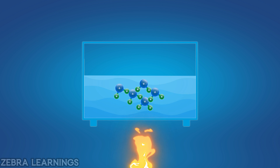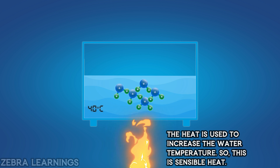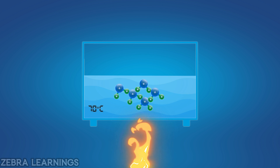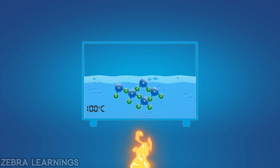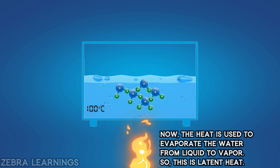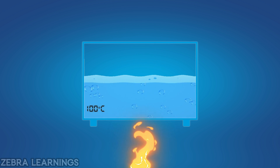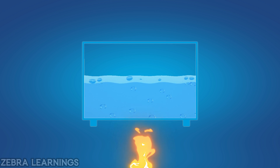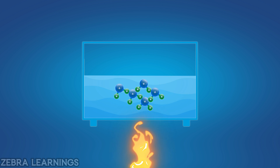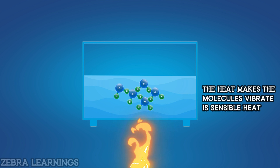Water molecules are all joined together. When we give heat to water, these molecules vibrate a little. When we give heat continuously, the vibrations of these molecules will increase. The molecules will vibrate until they reach 100 degrees Celsius. The heat that makes the molecules vibrate is the sensible heat.